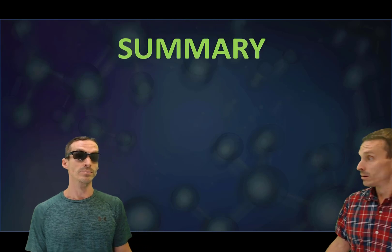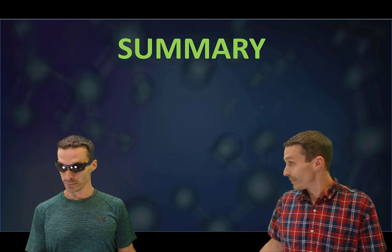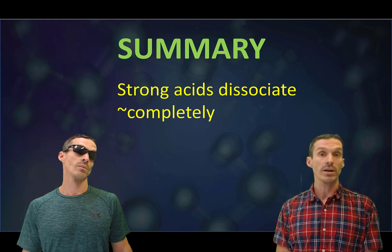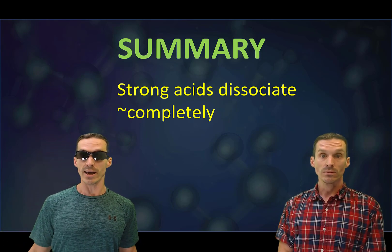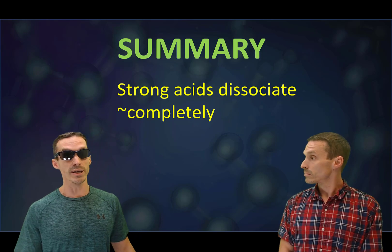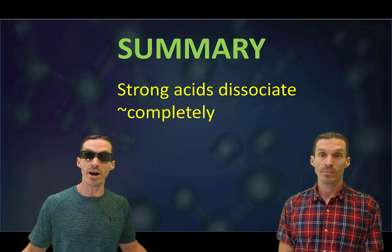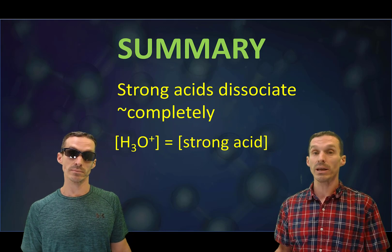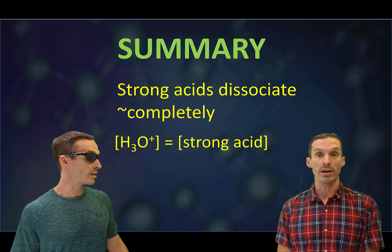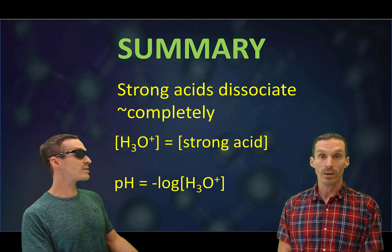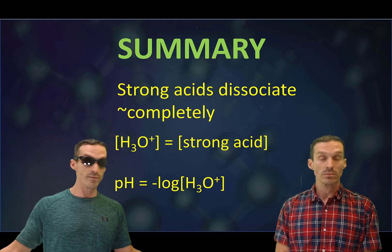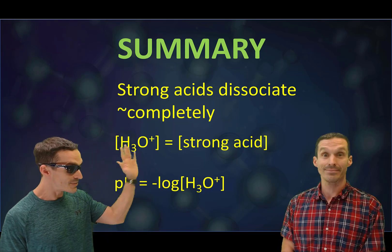We're at the end, so thank you for coming out and helping with the video. Let's just do a quick summary of what we learned today. We are going to say that strong acids dissociate completely, close enough. That's right. So that means that the concentration of H plus will be equal to the concentration of our strong acid. And pH is minus log concentration of H3O plus. Are we good? Right on, good stuff. See you later.